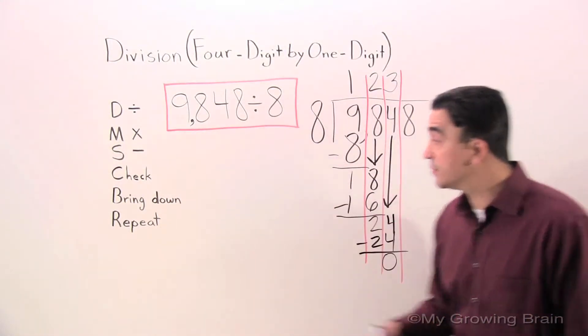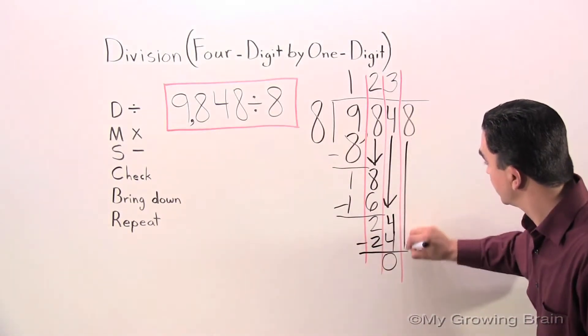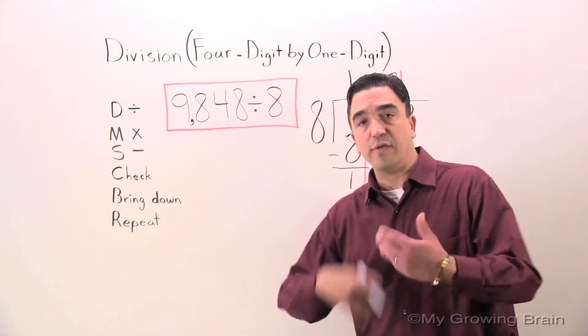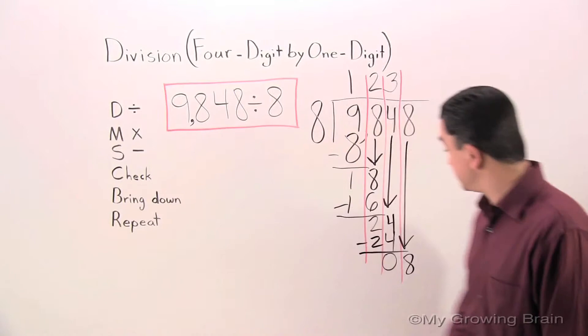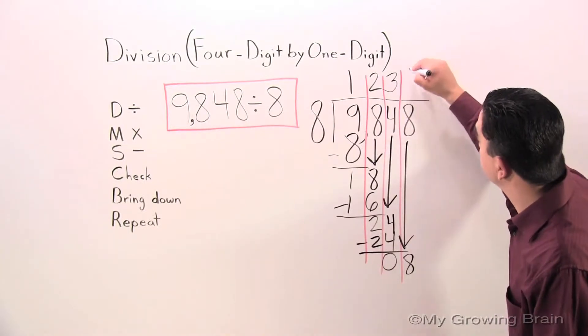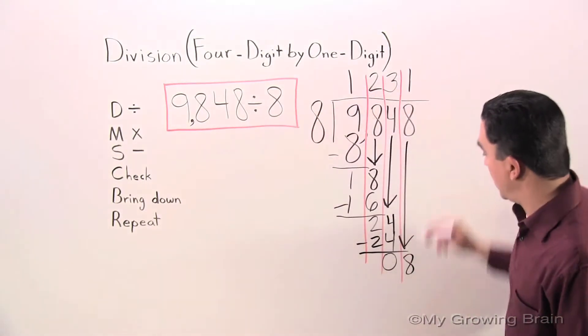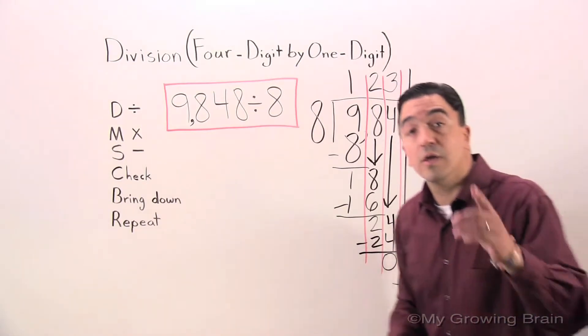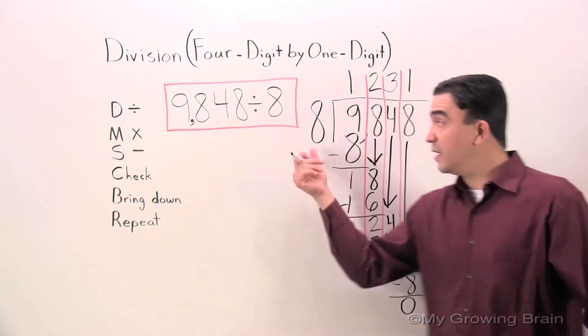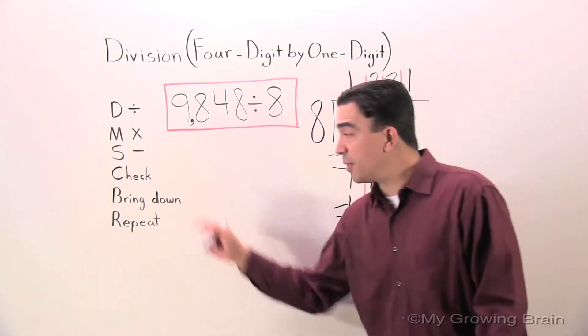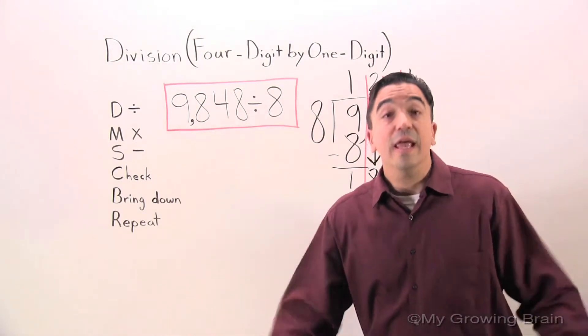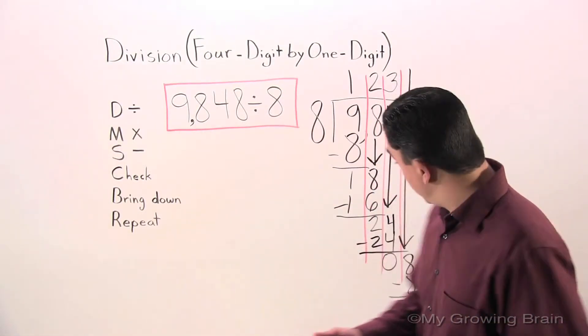Less than the divisor. Keep going. Bring down the 8. Repeat the process. Back to divide. 8 goes into 8 one time. Multiply. 8 times 1, 8. Subtract. 8 minus 8, 0. Check. 0 is less than 8, the divisor. Bring down. Nothing there. If there's nothing there, that means we're done. There is no remainder.